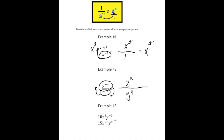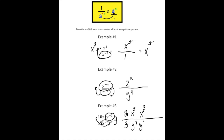Example number 3: we have 10x cubed, y to the negative second power, over 15x to the negative third, y to the seventh. Now, 10 fifteenths reduces down to two thirds — it's just a fraction. The x cubed is already positive, so I keep that. But x to the negative third is on the bottom, so I bring it up to make it a positive x cubed on top. The y to the seventh is already positive, so it stays on the bottom. But y to the negative second power is a negative exponent, so I bring that down, making it y squared. Finally, simplifying: 2, then x cubed times x cubed is x to the sixth, over 3y to the ninth.